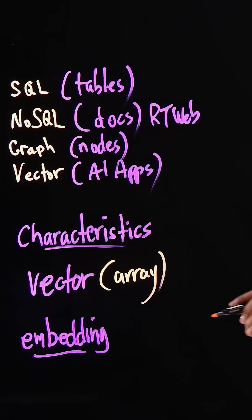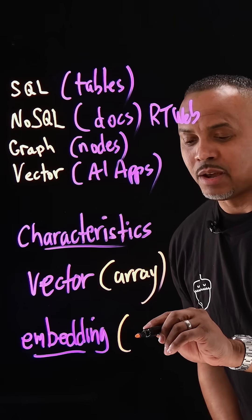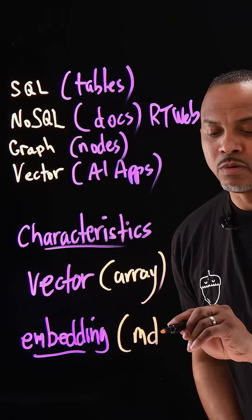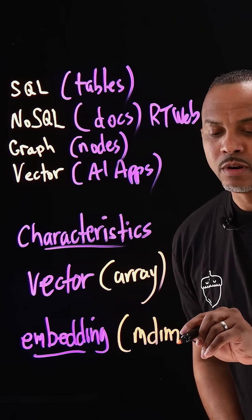So the embedding is lots of vectors that are stored in a multidimensional format, where they can then be used as groupings of vectors for data sets that can really start to grow and go from there.